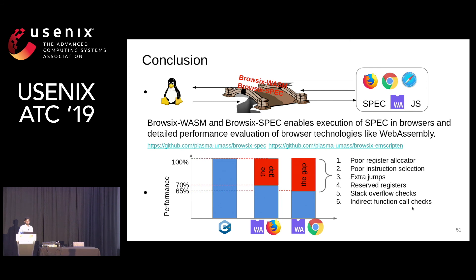Hi, John Criswell, University of Rochester. Nice work. One question: there is a tension between generating good code and generating code quickly. You've identified the problem that you're generating code quickly but not high-quality code.